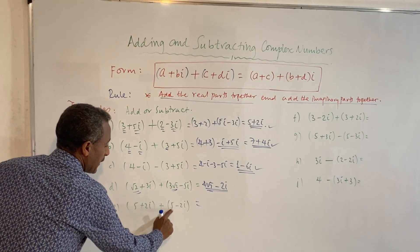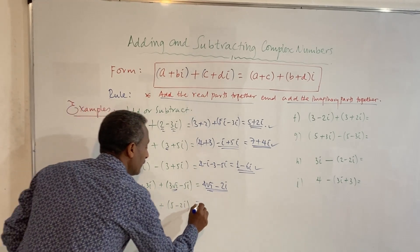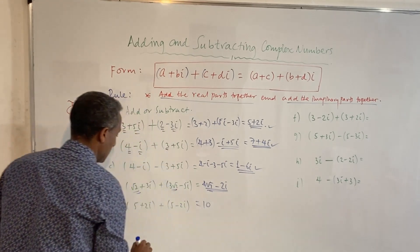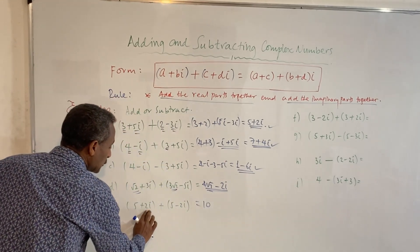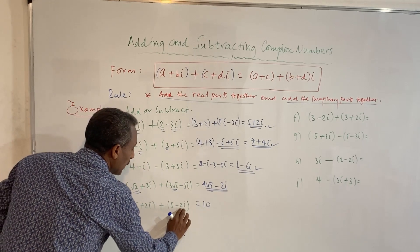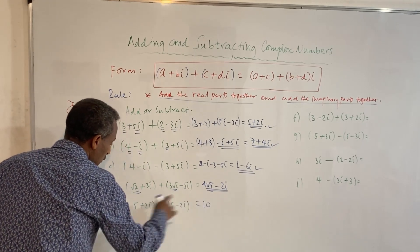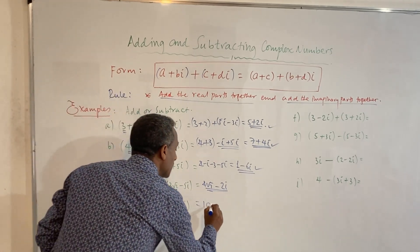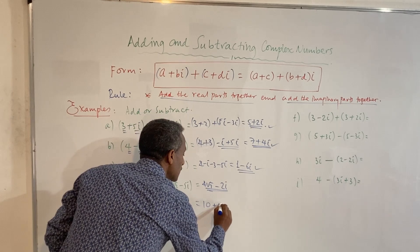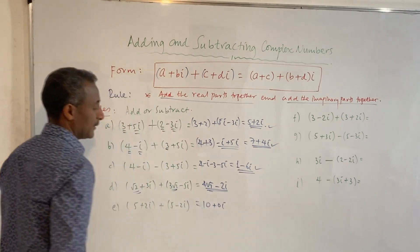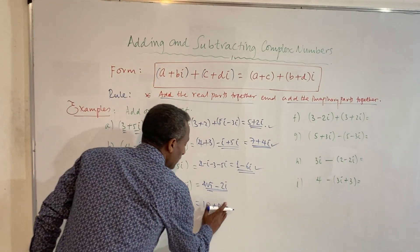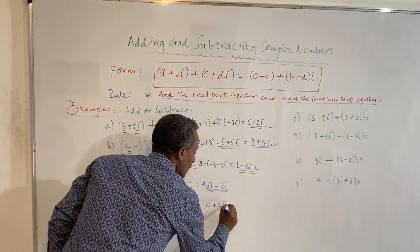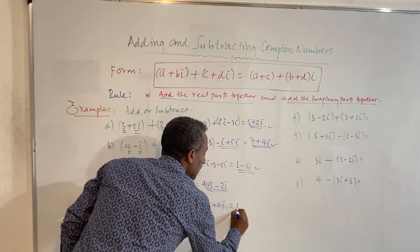Five plus five is ten. Plus 2i minus 2i gives zero i. So the answer is simply ten.